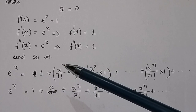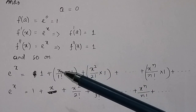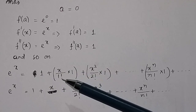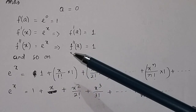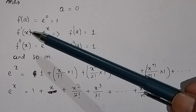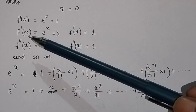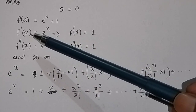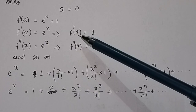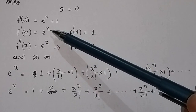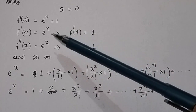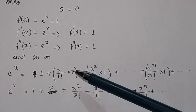The second term in the Taylor series is (x minus a) divided by factorial 1, times the first derivative at x = a. The first derivative of e^x with respect to x is e^x. Putting x = 0, f'(a) = e^0 = 1. So the second term becomes x times 1, which is x.